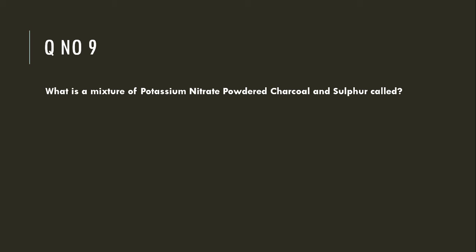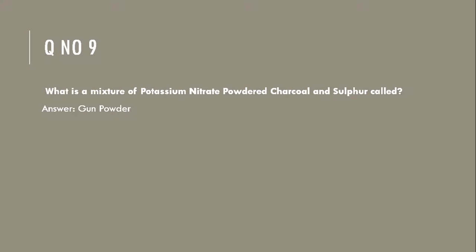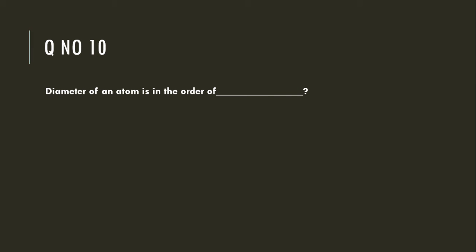What is a mixture of potassium nitrate powder, charcoal, and sulfur called? Gunpowder. The diameter of an atom is in the order of 0.2 nanometers.